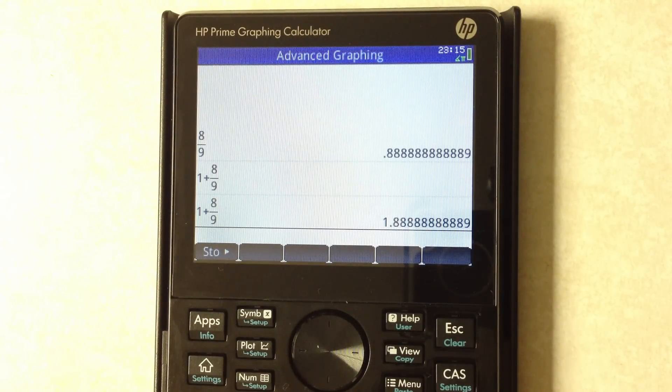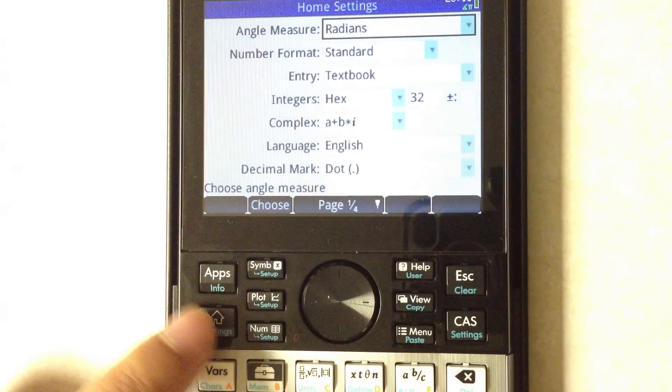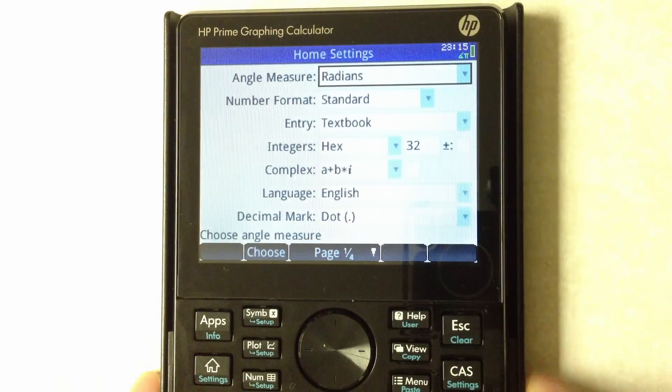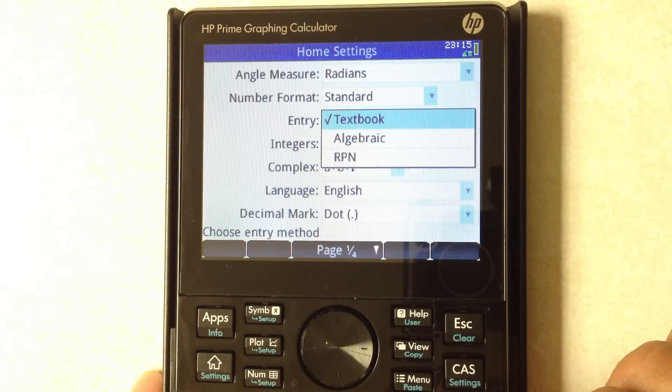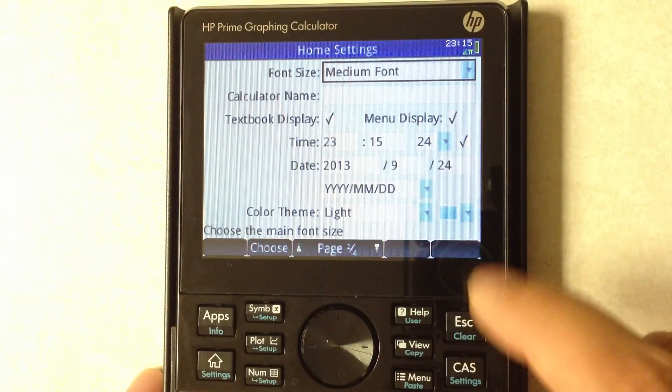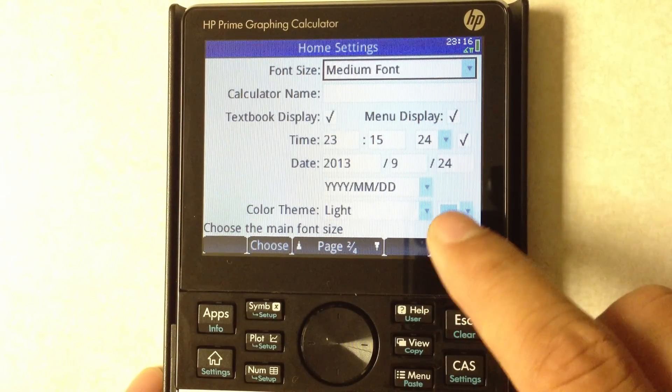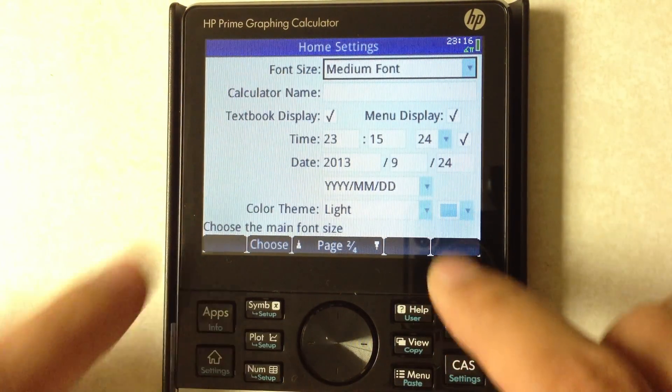We've already talked about touchscreen, we've talked about the colors. You can change the settings here with the shifted home key. You can use textbook, algebraic, or RPN entry. You can even change the theme with the colors as well as the font sizes.